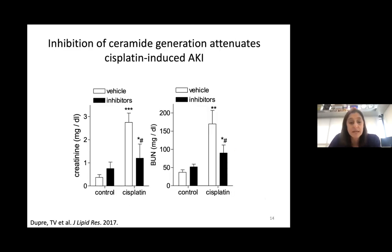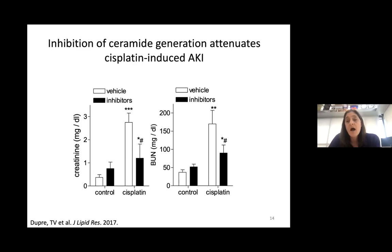When we look at kidney function, we measure serum creatinine and blood urea nitrogen. There is an overt increase in both with cisplatin, because the kidney freely filters these, and when it's not filtering they build up in circulation. When we inhibit the ceramide increase with these two inhibitors, that also blocks the serum creatinine and blood urea nitrogen increases.